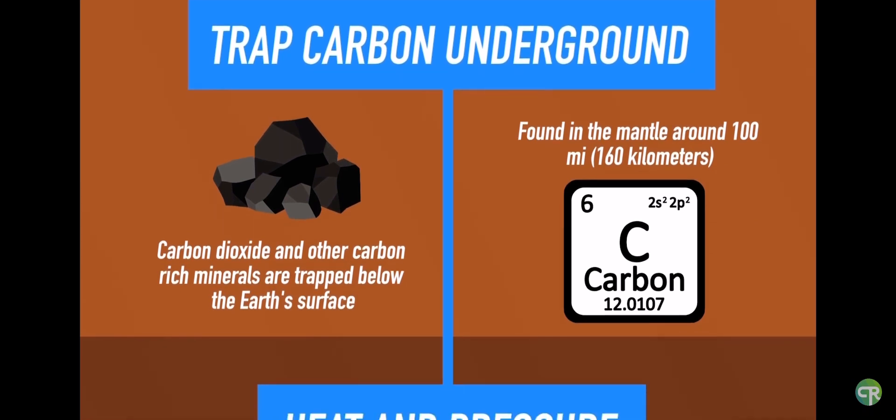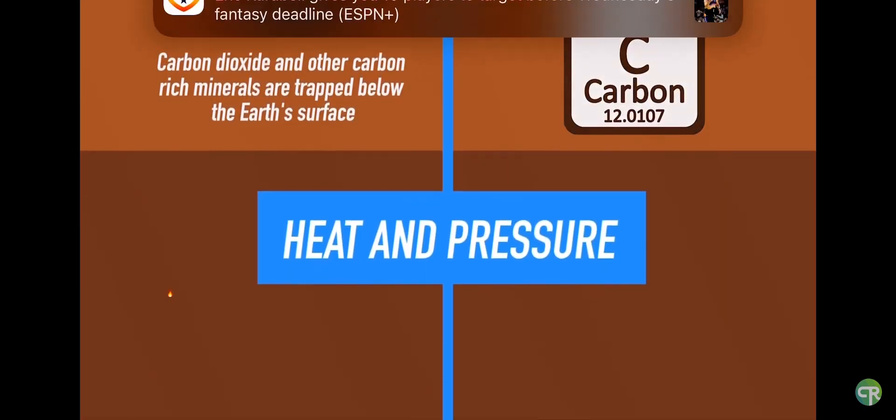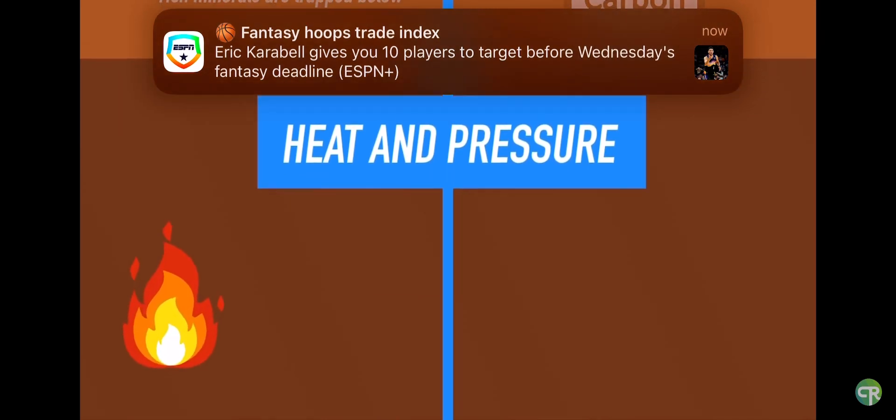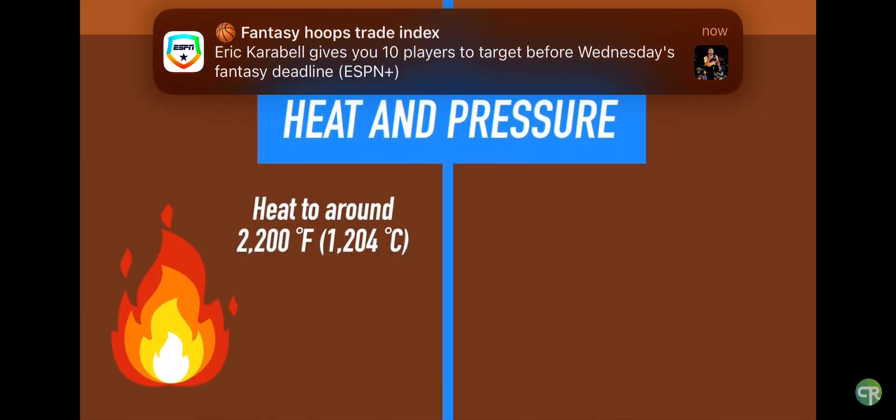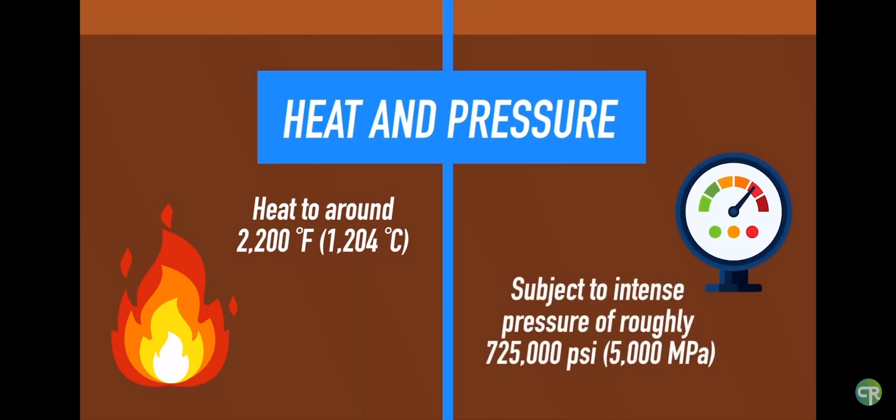The second step to forming a diamond is subjecting that carbon to heat and pressurization. The carbon needs to be heated to around 2,200 degrees Fahrenheit or 1,204 degrees Celsius. The carbon also needs to be subjected to an intense pressure of about 725,000 psi or 5,000 megapascals.